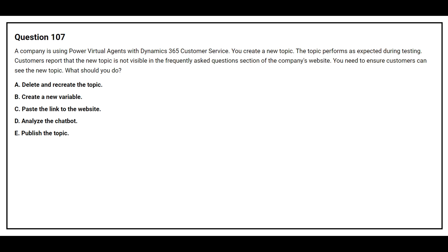Question number 107: A company is using Power Virtual Agents with Dynamics 365 Customer Service. You create a new topic. The topic performs as expected during testing. Customers report that the new topic is not visible in the frequently asked questions section of the company's website. You need to ensure customers can see the new topic. What should you do? Option A: delete and recreate the topic. Option B: create a new variable. Option C: paste the link to the website. Option D: analyze the chatbot. Option E: publish the topic. The correct answer is Option E: publish the topic.